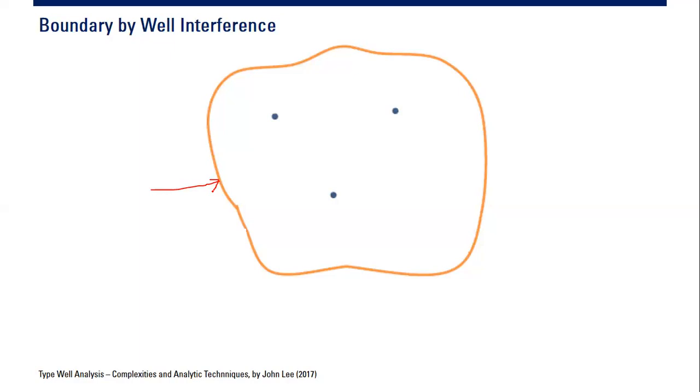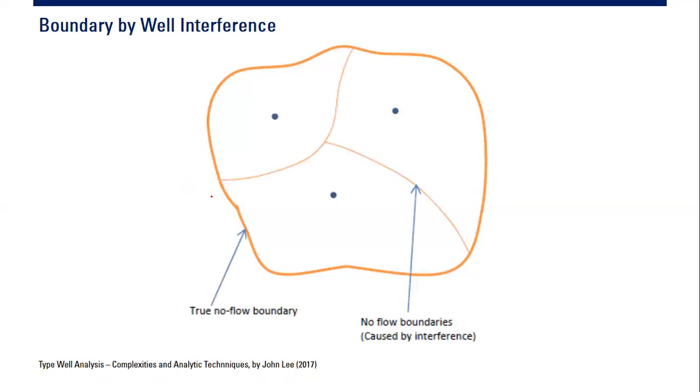That's the case, but actually that doesn't mean that the wells do not have any boundary at all. Because what really happens is like this - we of course have true no-flow boundary at the external point of the reservoir.